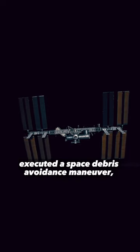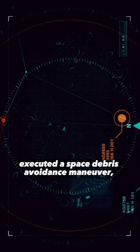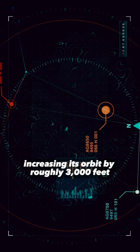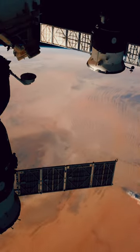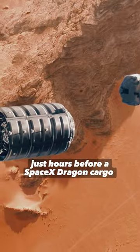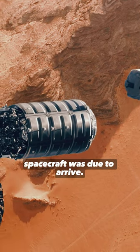The International Space Station executed a space debris avoidance maneuver, increasing its orbit roughly 3,000 feet, just an hour before SpaceX's Dragon cargo spacecraft was due to arrive.